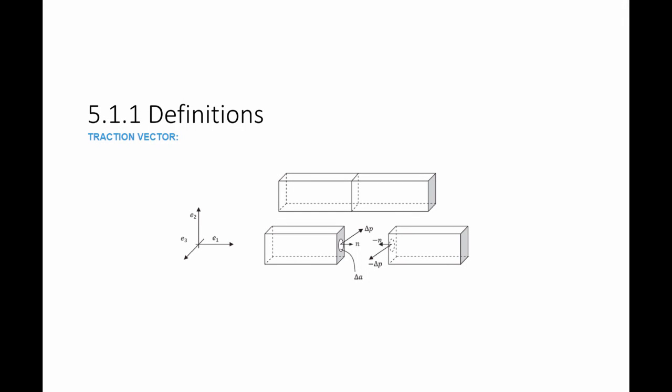The traction vector, or the stress vector at a point, can be found by finding all the forces acting on the area surrounding the point — the area with a value delta A and a normal vector n — and finding all the force vectors acting on that area. The traction vector is equal to the force divided by the area, which is the limit as delta A goes to zero of the delta P vector divided by delta A.